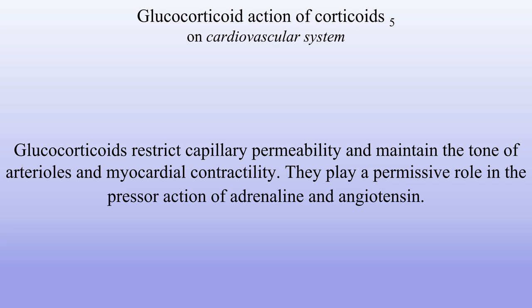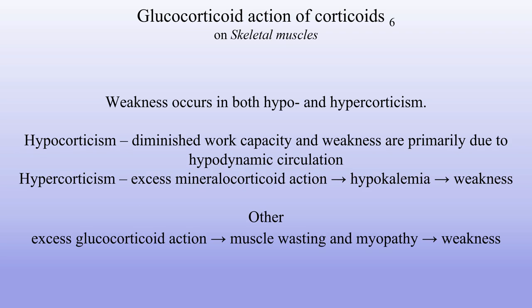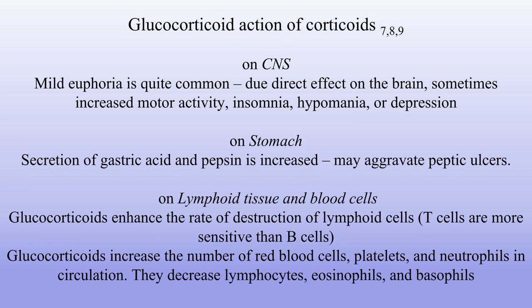Action on cardiovascular system: glucocorticoids restrict capillary permeability and maintain the tone of arterioles and myocardial contractility. They play a permissive role in the pressure action of adrenaline and angiotensin. Action on skeletal muscles: weakness occurs in both hypo- and hypercorticism. In hypocorticism, diminished work capacity and weakness are primarily due to hypodynamic circulation. In hypercorticism, excess mineralocorticoid action causes hypokalemia and weakness, while excess glucocorticoid action causes muscle wasting and myopathy. Actions on CNS: mild euphoria is quite common due to direct effect on the brain; sometimes increased motor activity, insomnia, hypomania or depression. Action on stomach: secretion of gastric acid and pepsin is increased, which may aggravate peptic ulcers.